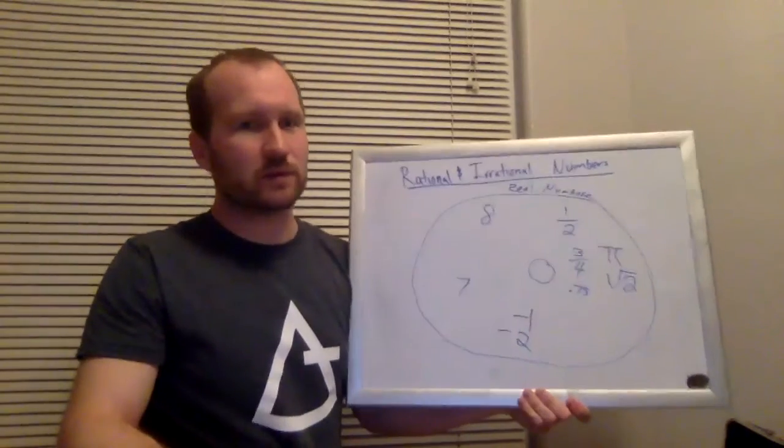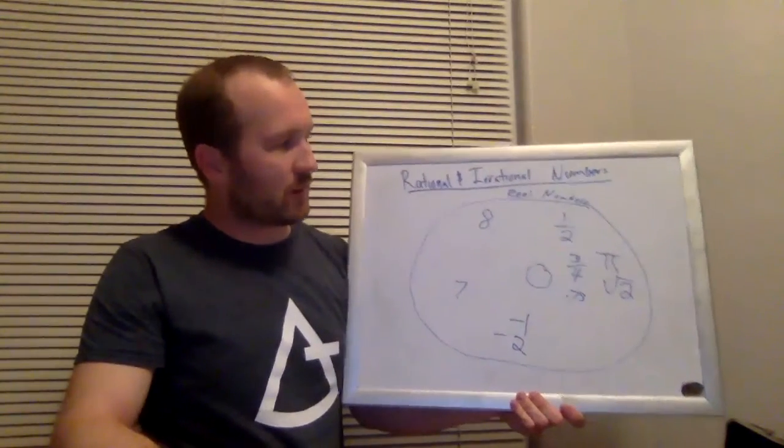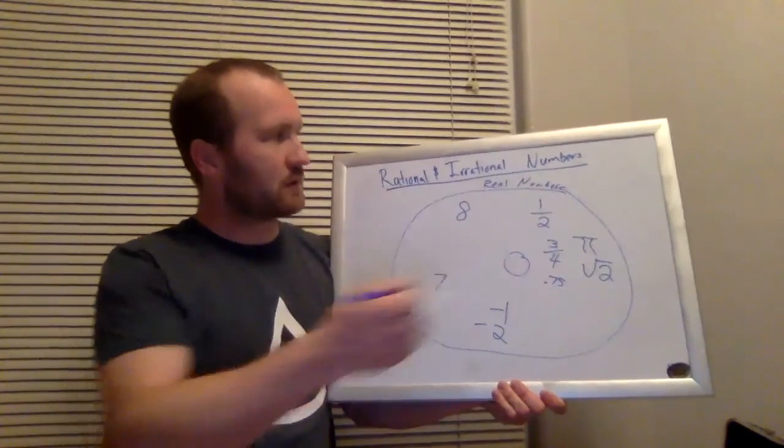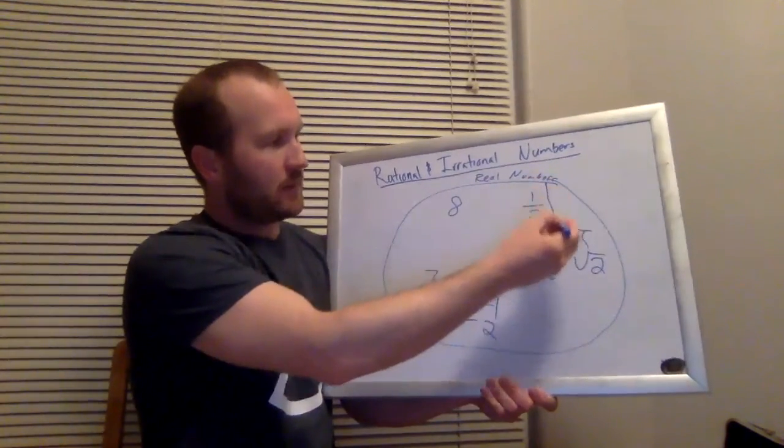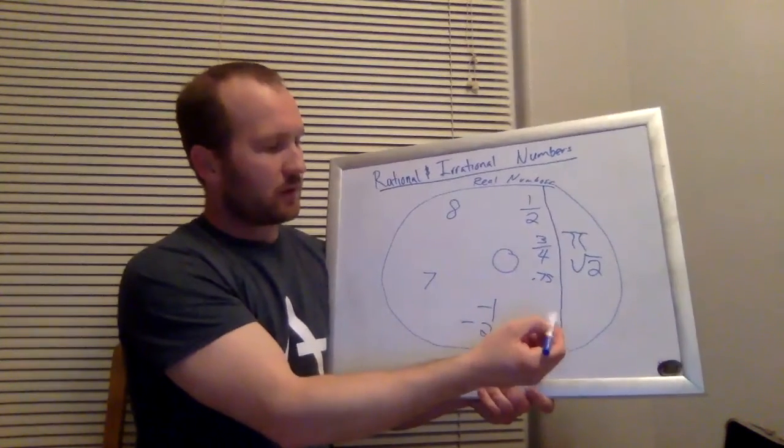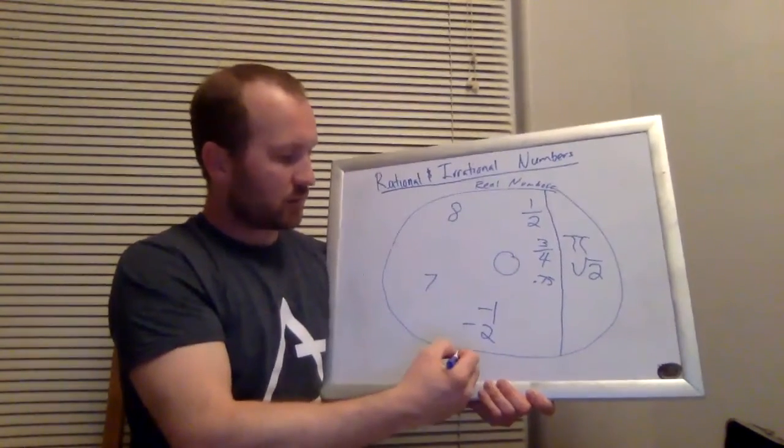Within these real numbers, we obviously have different types of numbers, right? And one of the first major divisions that we would make, basically all of these numbers over here, these would all be called rational numbers.